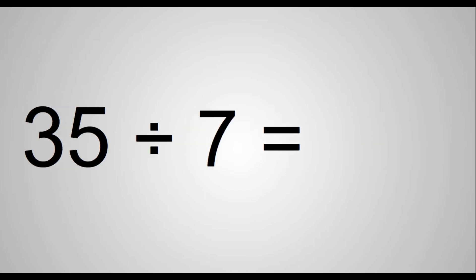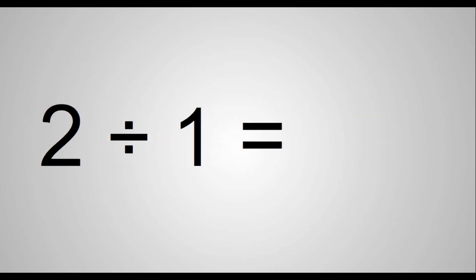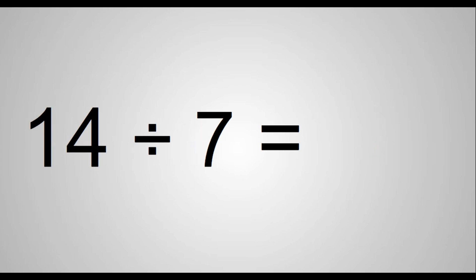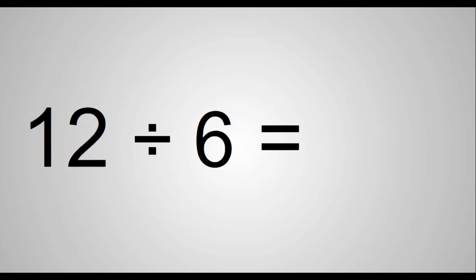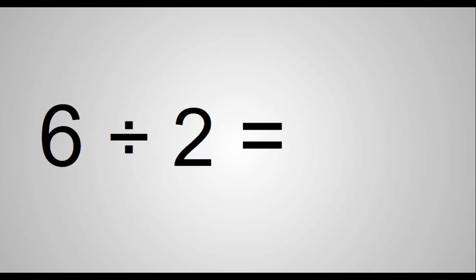35 divided by 7 equals 5. 2 divided by 5 equals 5. 2 divided by 1 equals 2. 14 divided by 7 equals 2. 24 divided by 8 equals 2.